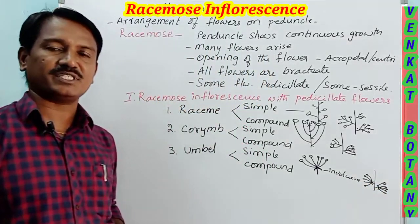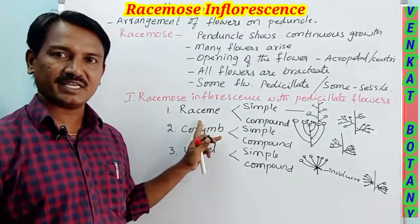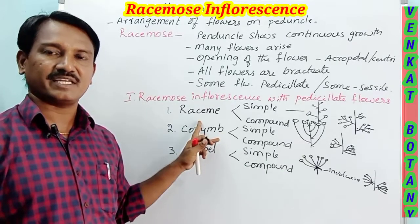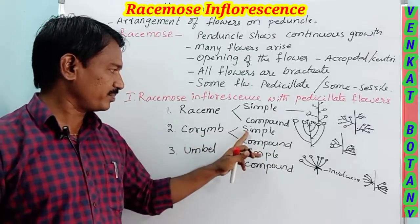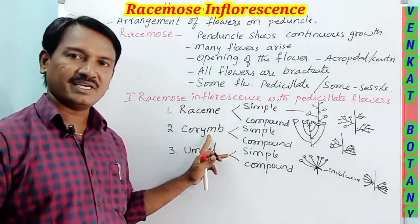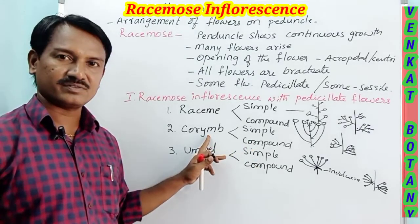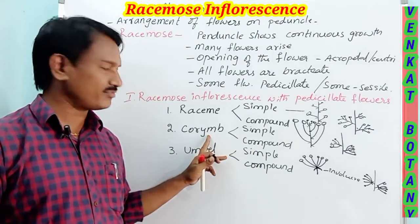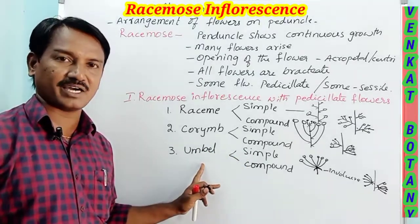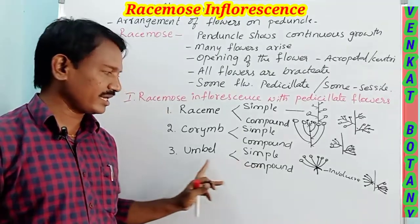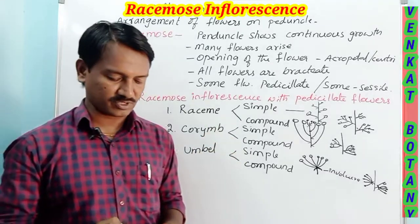Examples: simple raceme — Crotalaria; compound raceme — mango. Simple corymb — Cassia auriculata; compound corymb — cauliflower. Simple umbel — onion, Guruchi; compound umbel — carrot.